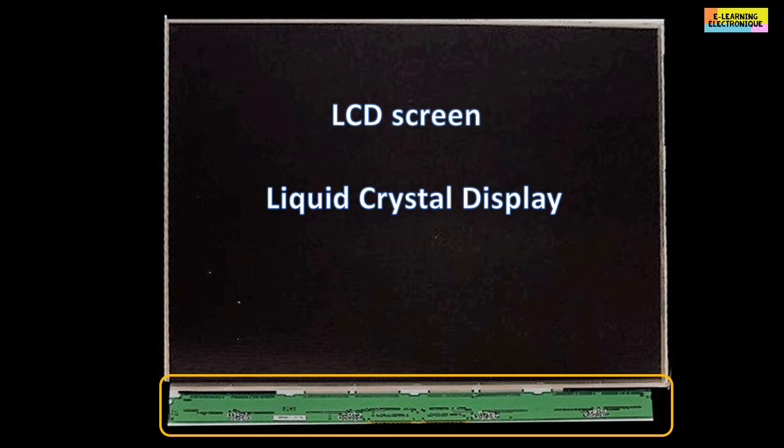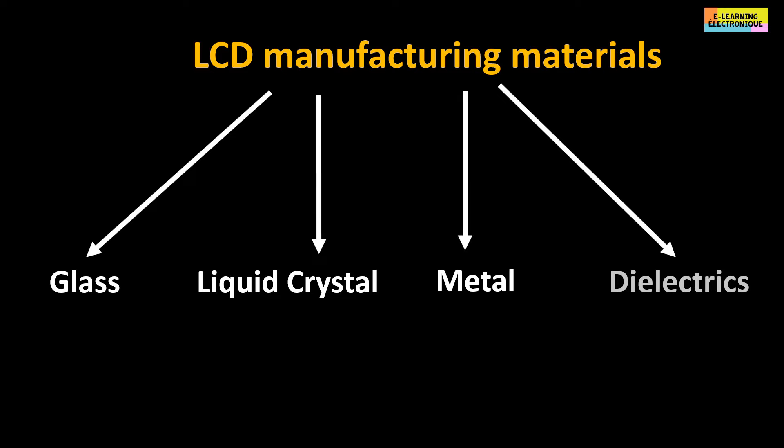The term LCD is an abbreviation of liquid crystal display. The screen is sometimes called panel. The LCD screen is made of an assembly of several layers. The materials used are glass, liquid crystal, metals and dielectrics.